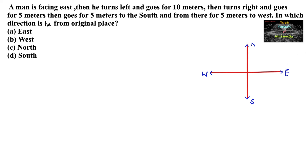A man is facing east. He turns left and goes for 10 meters, then turns right and goes for 5 meters, then goes for 5 meters to the south, and from there 5 meters to the west. In which direction is he from the original place? Let us take the directions east, west, north, and south and follow accordingly.